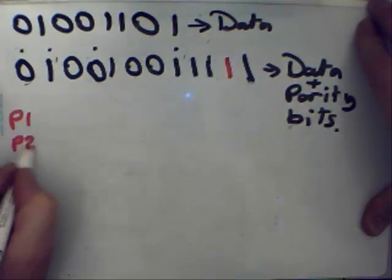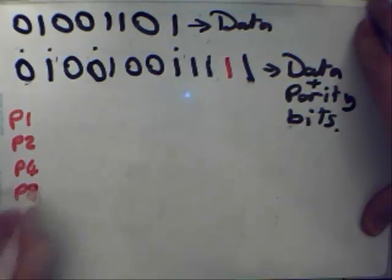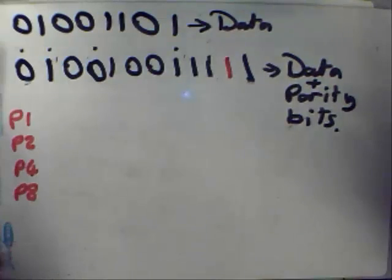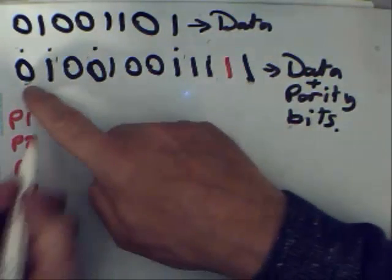We're going to be looking at bit positions 1, 2, 4 and 8 where the parity bits are. And it's the same check, skip, check, skip idea that was used when we encoded the parity bits in there.